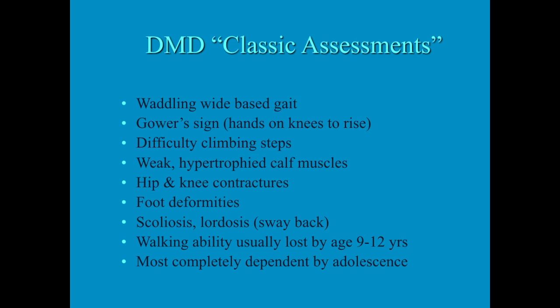Classic findings in a child with muscular dystrophy include a waddling, wide-based gait — they put their feet apart in order to be stable. They display what we call the Gower sign, where they go forward on their hands, place them on their knees, and raise up their trunk to stand. They have a lot of difficulty climbing steps because they can't get the muscles to raise the heavy leg.